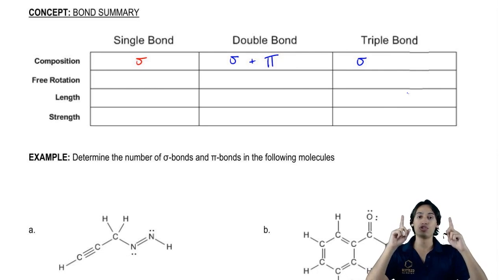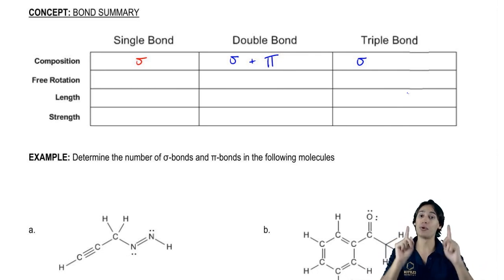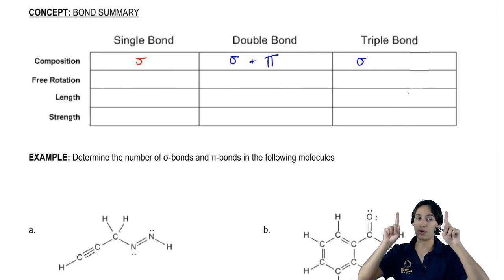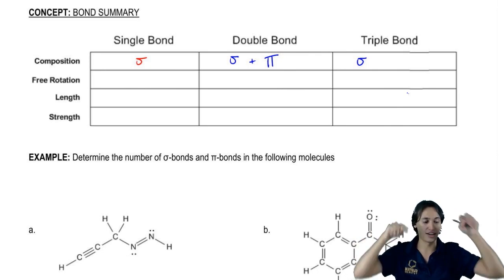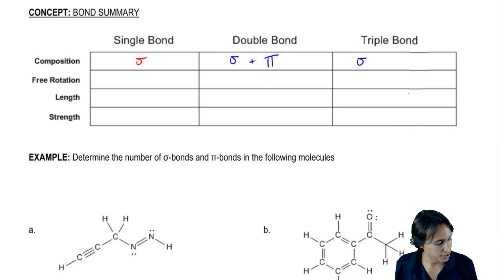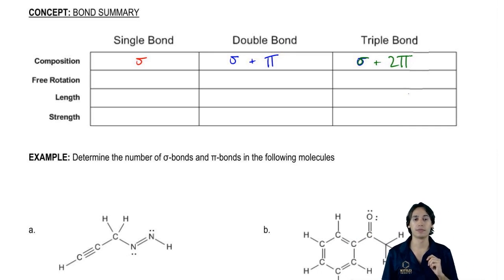What that's going to be is still that one sigma from the middle from the s's. But for a triple bond, now you have two sets of p orbitals on both sides that are overlapping, one up and down and one side to side. So a triple bond is made out of one sigma and two pi.